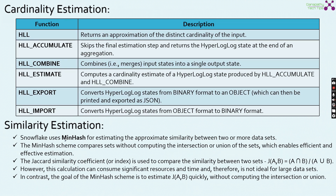The Jaccard similarity index gives the data available in common between two data sets divided by the total number of records in both data sets. However, this calculation can consume significant resources and therefore is not ideal for large data sets. In contrast, the goal of the MinHash scheme is to estimate J(A, B) — the Jaccard similarity function — very quickly without computing the intersection or union.